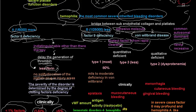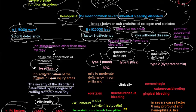The types of von Willebrand disease are either quantitative deficiency or qualitative deficiency. Quantitative deficiency refers to the quantity — the count — of von Willebrand factors, and may be Type 1 or Type 3.